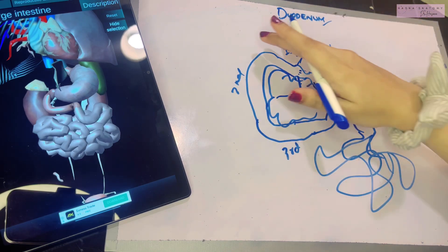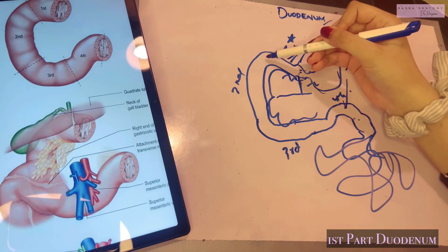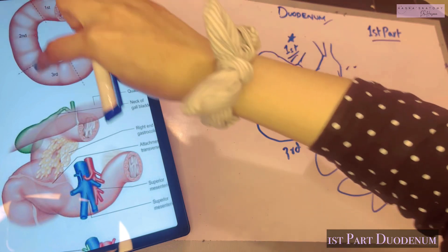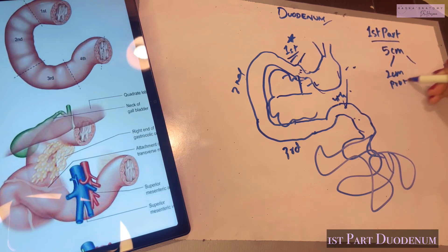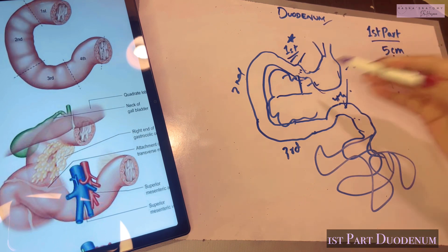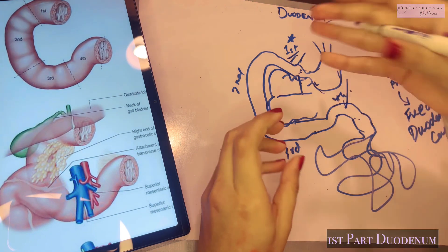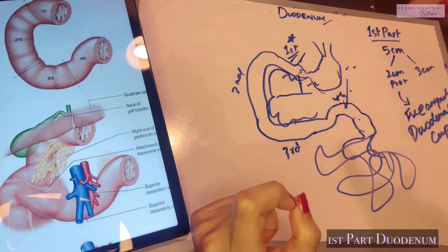The first part of the duodenum begins at the pylorus and ends at the superior duodenal flexure — the first curve in the duodenum. The inferior duodenal flexure connects the second and third parts. The first part's total length is 5 centimeters, divided into a proximal 2 centimeters and a distal 3 centimeters. The proximal 2 centimeters is known as the free ampulla or the duodenal cap, because on barium meal X-ray it appears as a cap-like prominence.